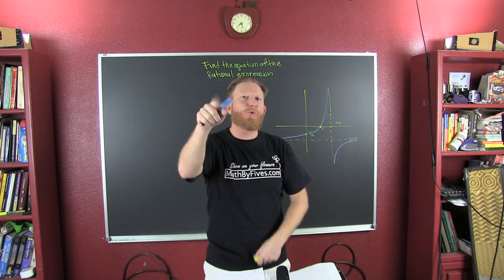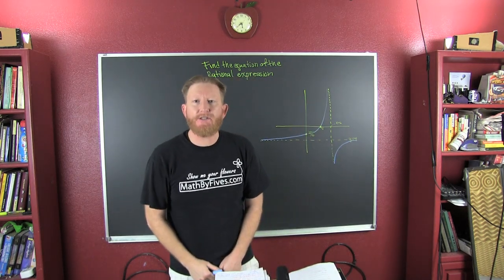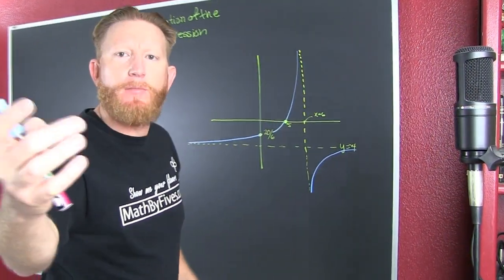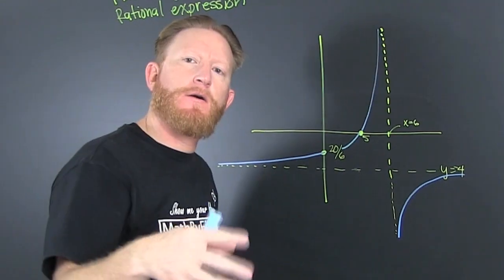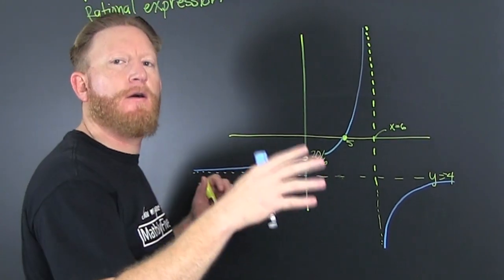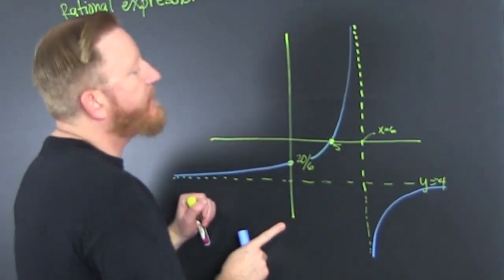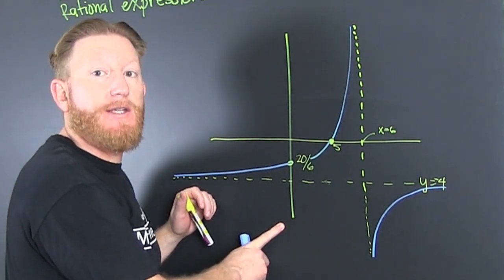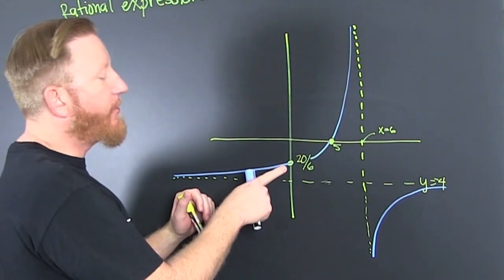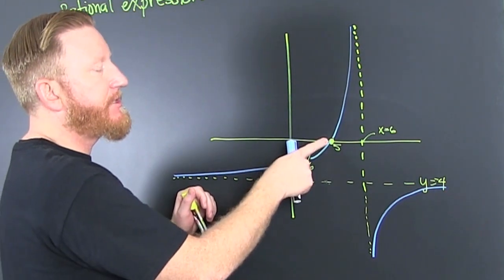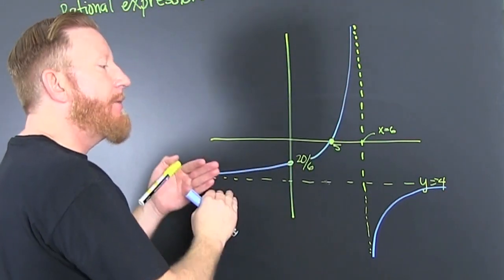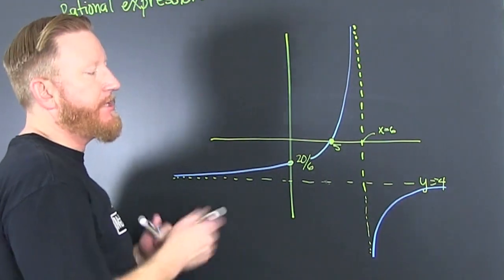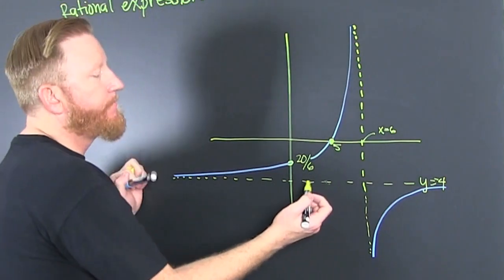We are trying to find the equation of a rational expression from a graph. I have this picture and I want the equation of this picture. We see that there are a couple of things: we have a y-intercept, we have an x-intercept, we have an asymptote, and we have another asymptote. The ones we might want to start with is that one.